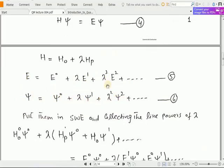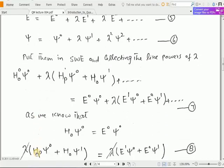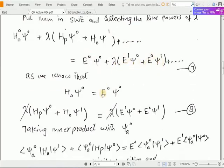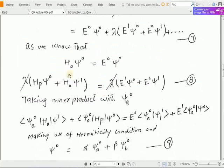Now use these equations in equation number 4 and collecting the like powers of lambda, we will get the equation of the form expressed over here: H_0ψ^0 + λ(H_pψ^0 + H_0ψ^1) and so on, equals E^0ψ^0 + λ(E^1ψ^0 + E^0ψ^1). Here H_0ψ^0 = E^0ψ^0 corresponds to ground state energy and comparing the power of lambda 1 we will get this equation.